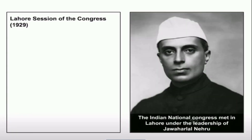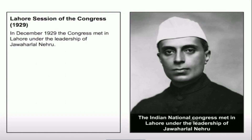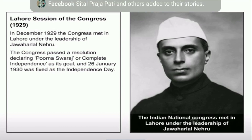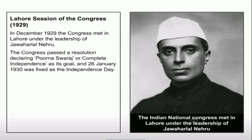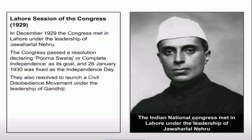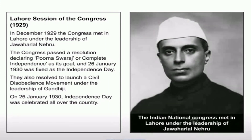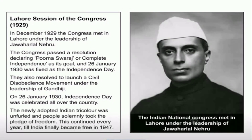Lahore Session of the Congress 1929: In December 1929, the Congress met in Lahore under the leadership of Jawaharlal Nehru. The Congress passed a resolution declaring Poorna Swaraj, or complete independence, as its goal, and 26th January 1930 was fixed as Independence Day. They also resolved to launch a civil disobedience movement under the leadership of Gandhiji. On 26th January 1930, Independence Day was celebrated all over the country. The newly adopted Indian tricolor was unfurled and people solemnly took the pledge of freedom. This continued every year till India finally became free in 1947.